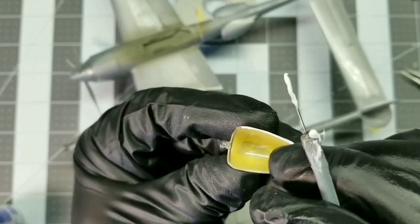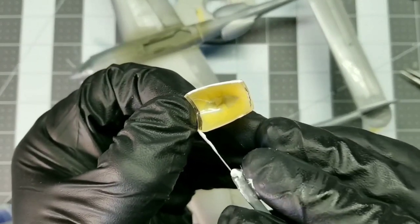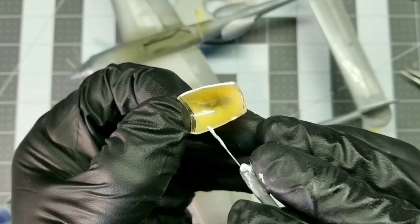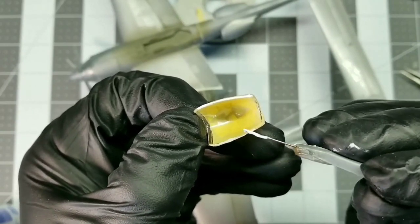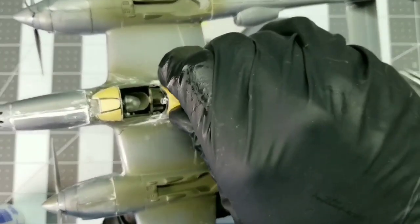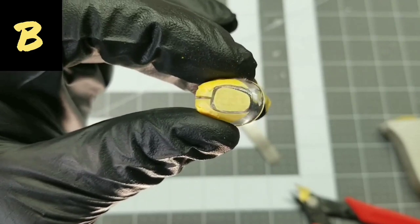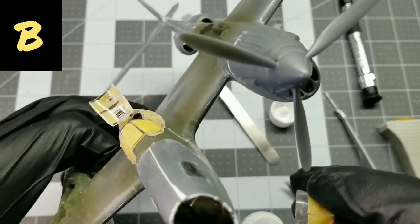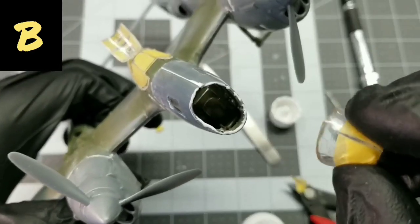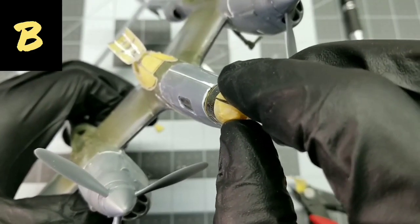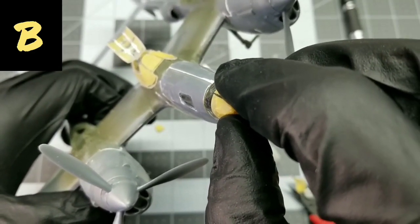So now I'm just gluing those clear pieces on and this is just going to polish up the build. This is the Droop Snoop's nose. And there, we got three P38s.